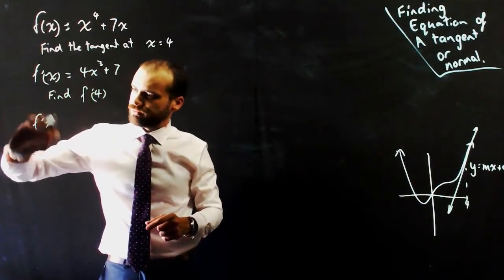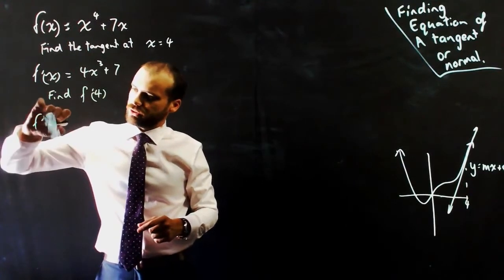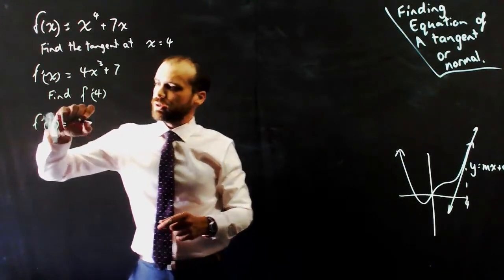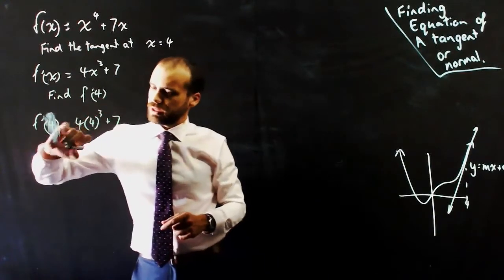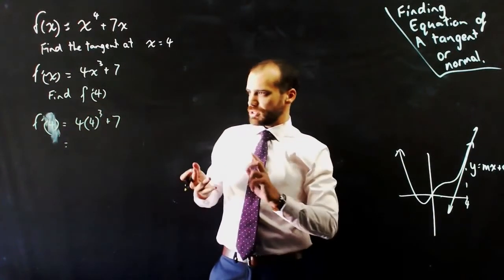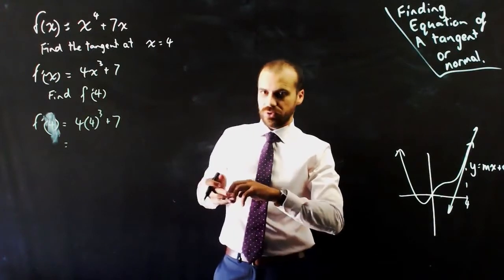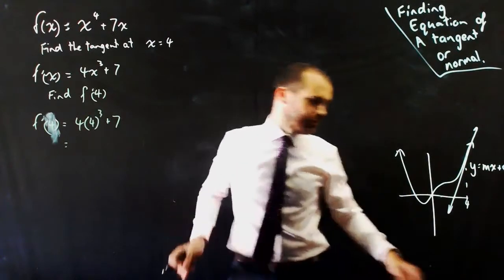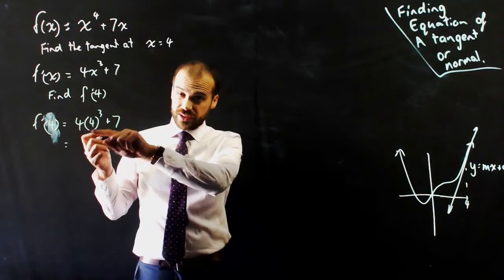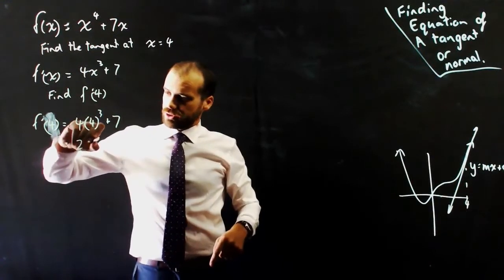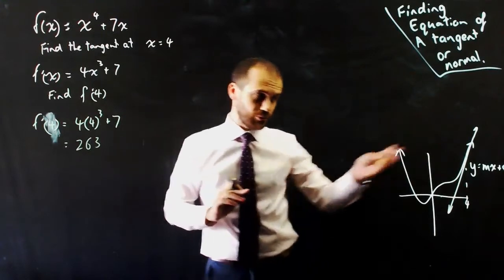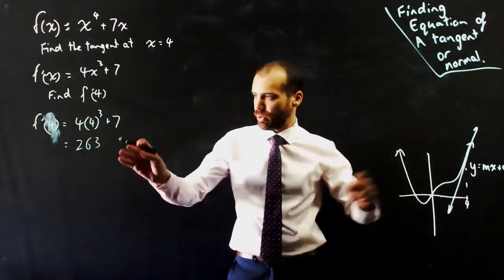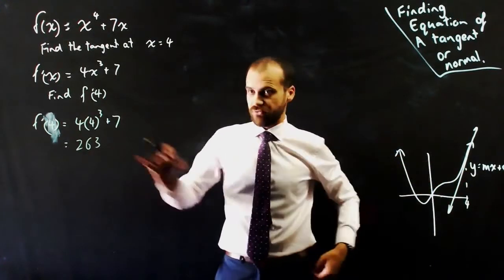f'(4) = 4(4³) + 7. That's 4, 16, 64, 200 and something, 256 plus 7, 263. Alright, so it turns out the gradient at that point at x = 4 is very large.